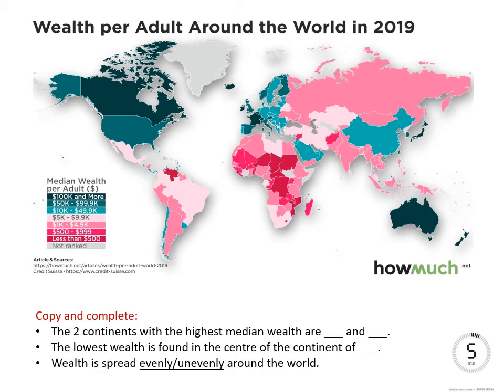Let's get back to the facts. We have a colourful choropleth map using shades of colour to show the median wealth per adult measured in dollars — looking at the average wealth per adult in each country. Green indicates the wealthier end; pink indicates the least wealthy end, with pastel light pink in the middle. The darker the green, the more wealth; the darker the pink, the lower the wealth. I'd like you to copy and complete the three bullet points at the bottom, picking the correct option where two are given. Spend about five minutes on that.